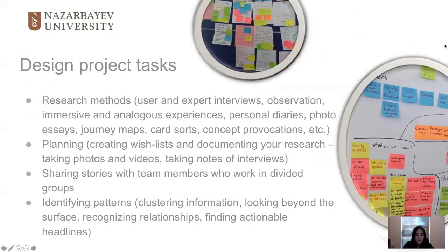Core research methods in any design project include different types of interviews, experiences, and observations, while additional research methods include personal diaries, photo essays, journey maps, card sorts, and so on. Planning the research involves creating different types of assistive materials while documenting your research by capturing what you see, which is helpful for the next phases.